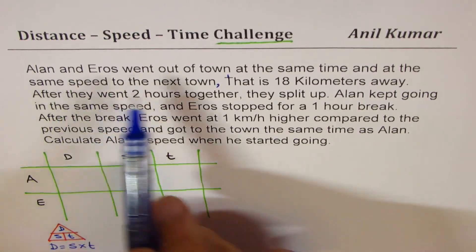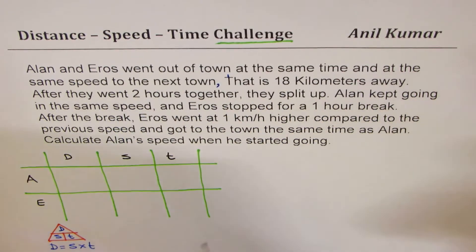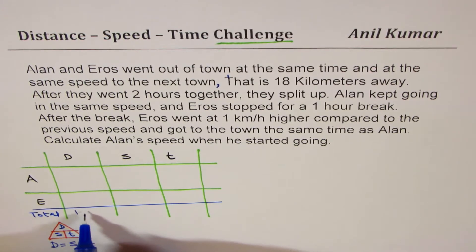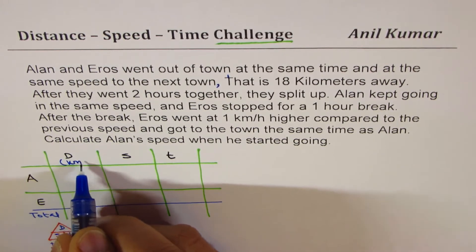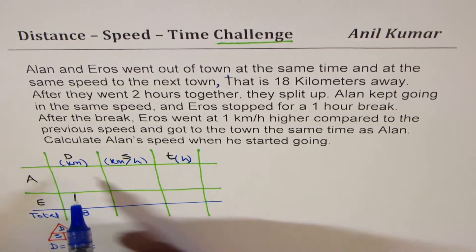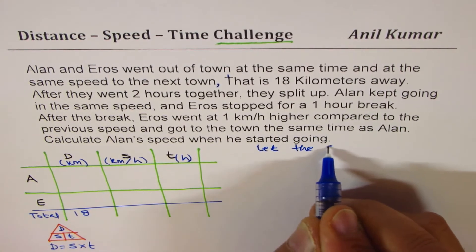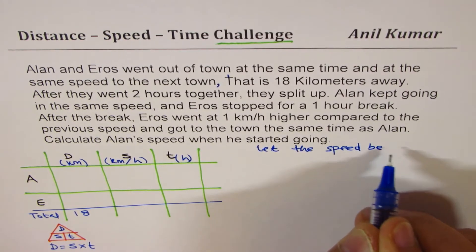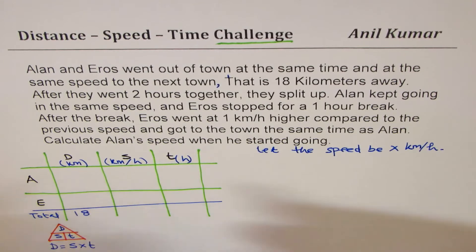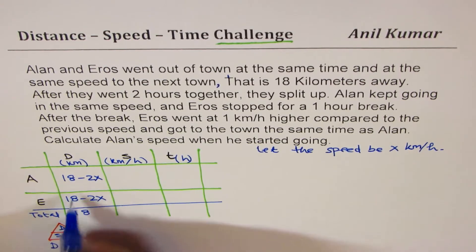We are given that they start at the same time to reach another town which is 18 kilometers away, and they are together for two hours. The total distance is 18 kilometers, speed is in kilometers per hour, and time in hours. Let the speed be x kilometers per hour. In two hours they will cover 2x kilometers, so the distance remaining will be 18 minus 2x.